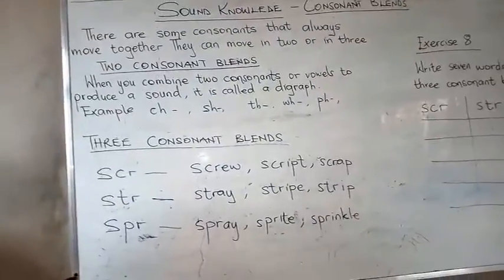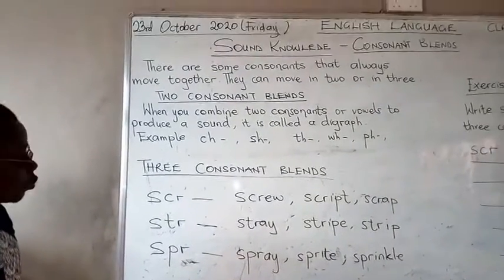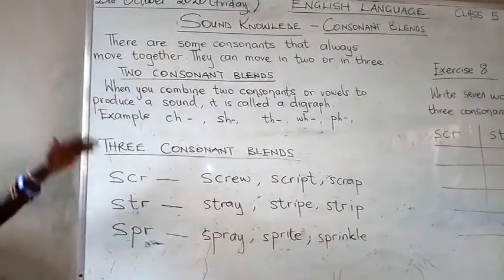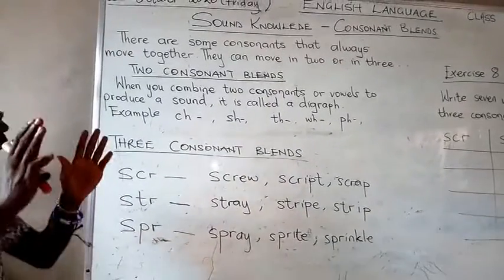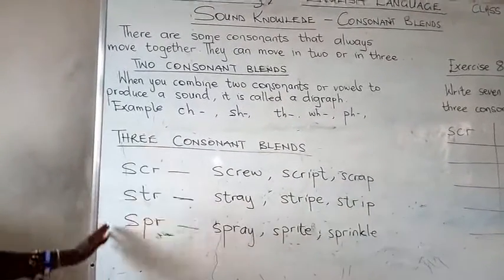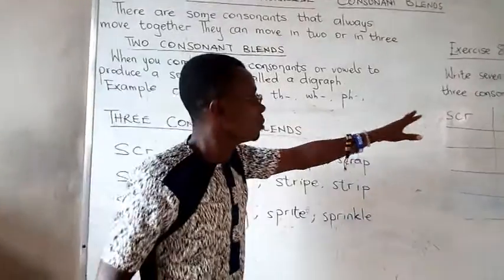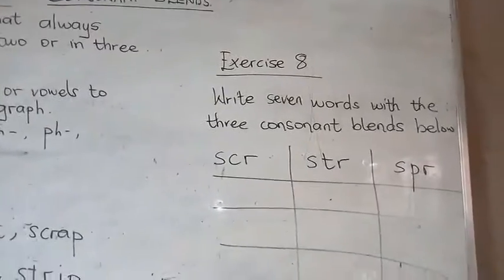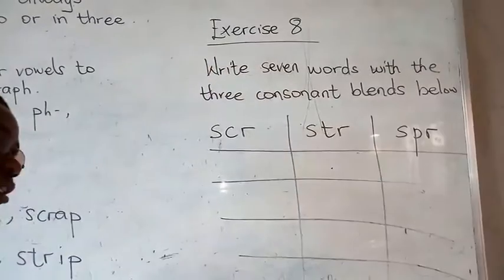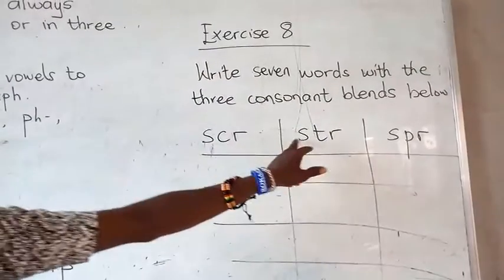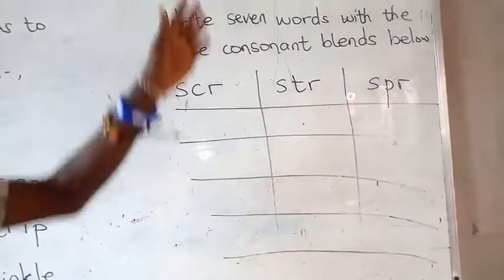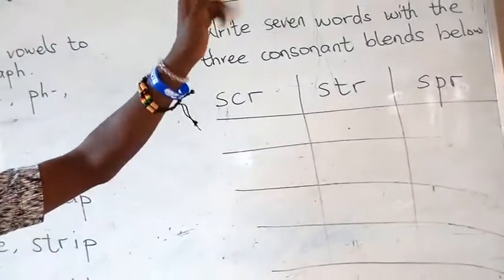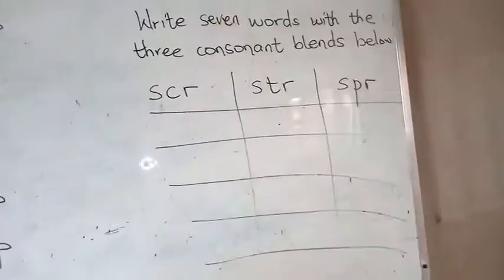So this is how the consonants move and are used in word formation. We have two consonants which always move together, and we also have three consonants which always move together in word formation. Now answer this question for me: write seven words with the three consonant blends we have discussed — seven words with SCR, then seven words with STR, and seven words with SPR. After that, submit them to me.